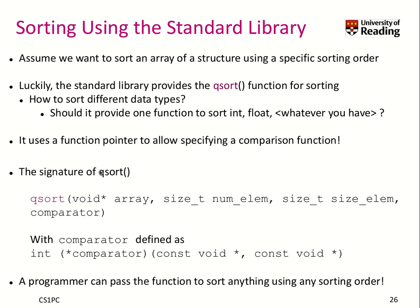Let's have a look at how the signature of qsort looks in our library. qsort takes an array as input of any type — its array is a pointer to void, so it can be anything, like a pointer to a structure, array, or whatever you have, but it must be an array. This array has num elements, and qsort has to know the size of each element — for example, 4 bytes, 8 bytes, 16 bytes. And last, you give it a comparator.